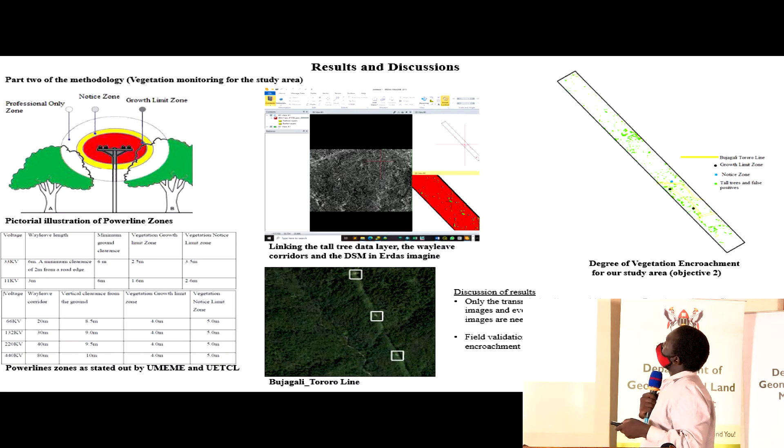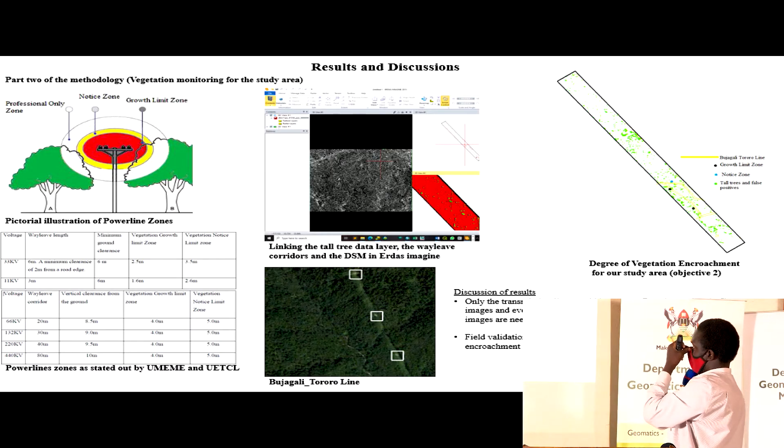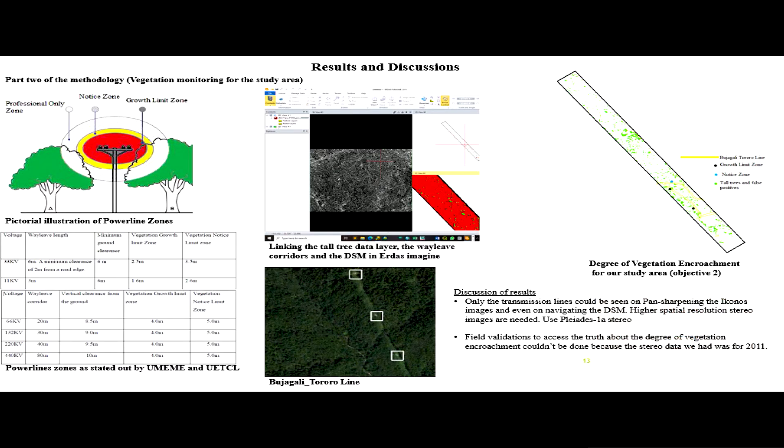In ERDAS Imagine, I'm able to get buffers from the Umeme UETCL documents. I'm linking three windows such that when I'm moving in the buffers, here I'm moving in the layer having tall trees and false positives.